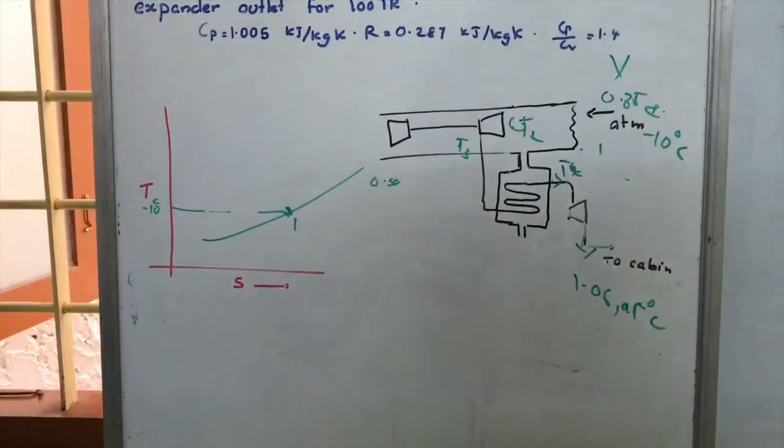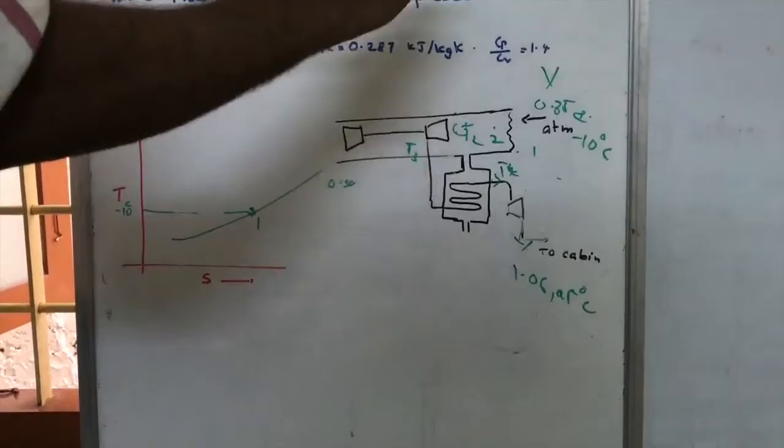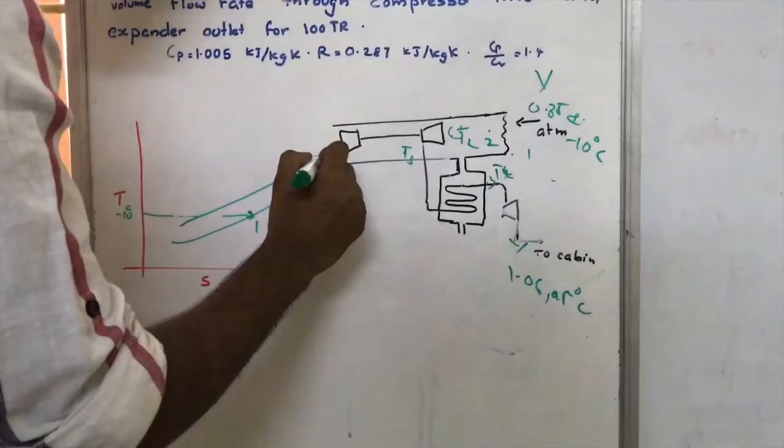After Point 1, there is a ramming process in which pressure increases. After ramming, the state is denoted as Point 2. The pressure at Point 2 is the ram pressure P2.